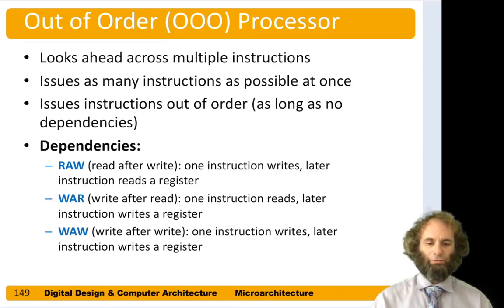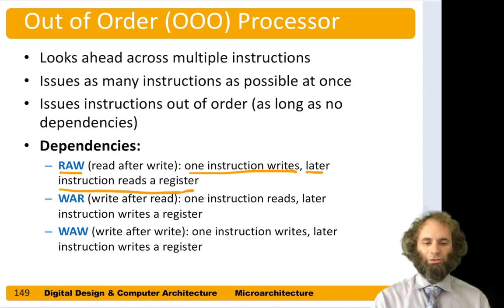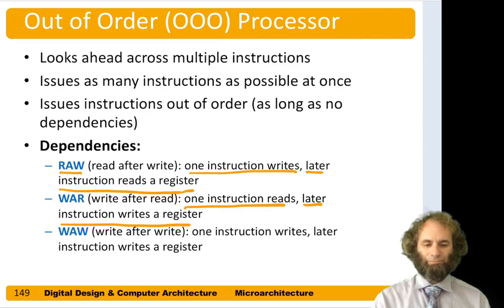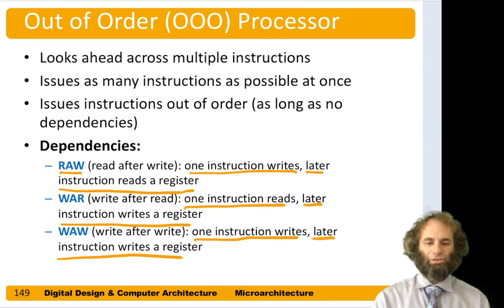The dependencies we need to look for are called RAW, WAR, and WAW. In a read-after-write (RAW) dependency, one instruction writes and a later instruction reads that register — we must wait for the write or use forwarding. In a write-after-read (WAR) dependency, an instruction that reads a register can't be moved after one that writes it, or we'd get the wrong answer. In a write-after-write (WAW) dependency, two instructions write the same register and must stay in order so the register holds the result of the second instruction, not the first.